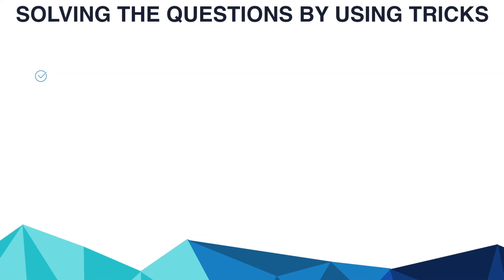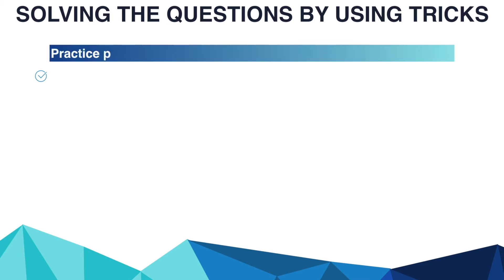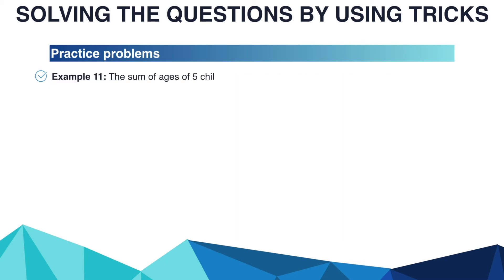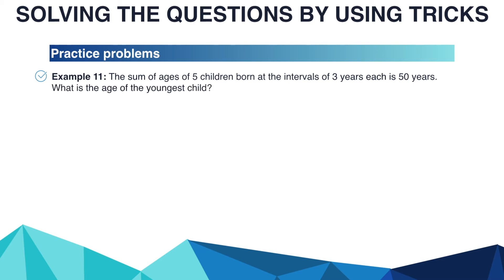There are some practice problems. Please try to solve them by yourself. Example: the total age of A and B is 12 years more than the total age of B and C. C is how many years younger than A? Options: A: 12, B: 13, C: 14, D: 15. Another example: the sum of ages of 5 children born at intervals of 3 years each is 50 years. What is the age of the youngest child? Options: A: 2, B: 4, C: 6, D: 10.